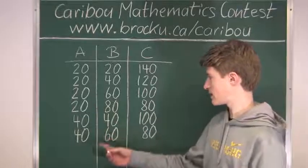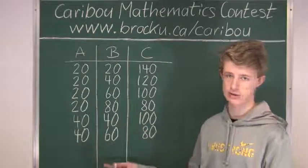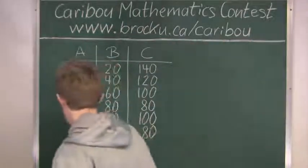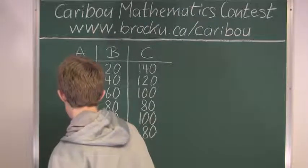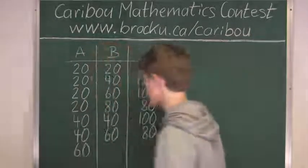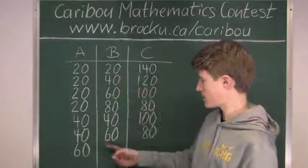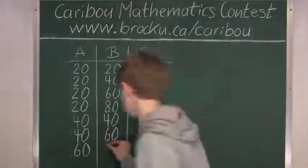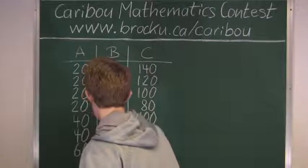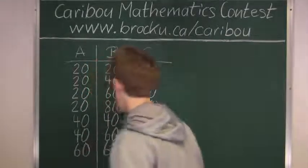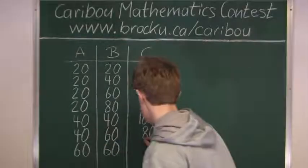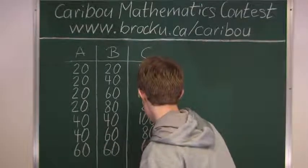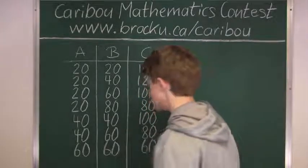So now we will take the next smallest possible value for A, which is 60. So now we know that B can equal to 60. And therefore, we know that 180 minus 120 is 60.